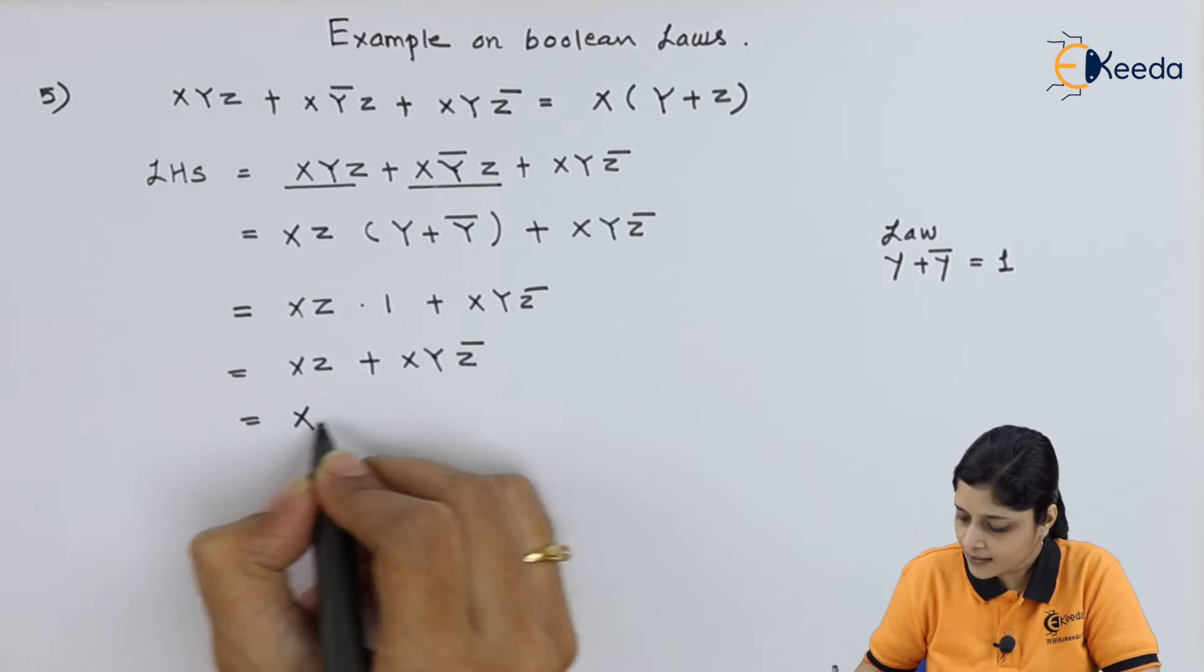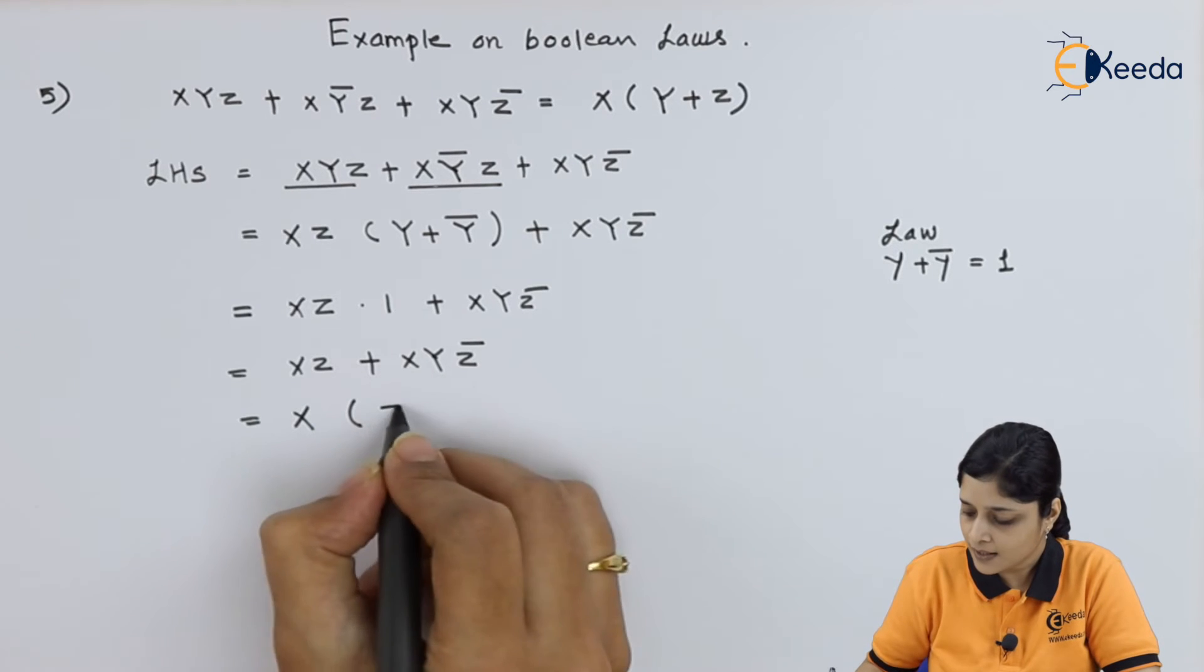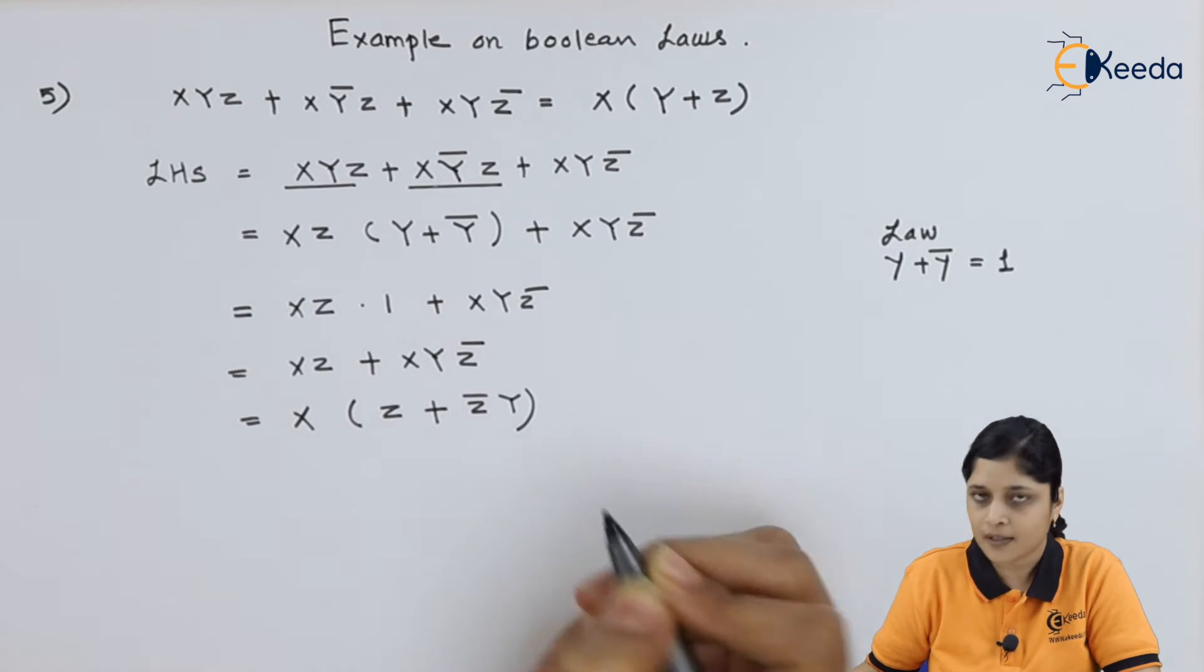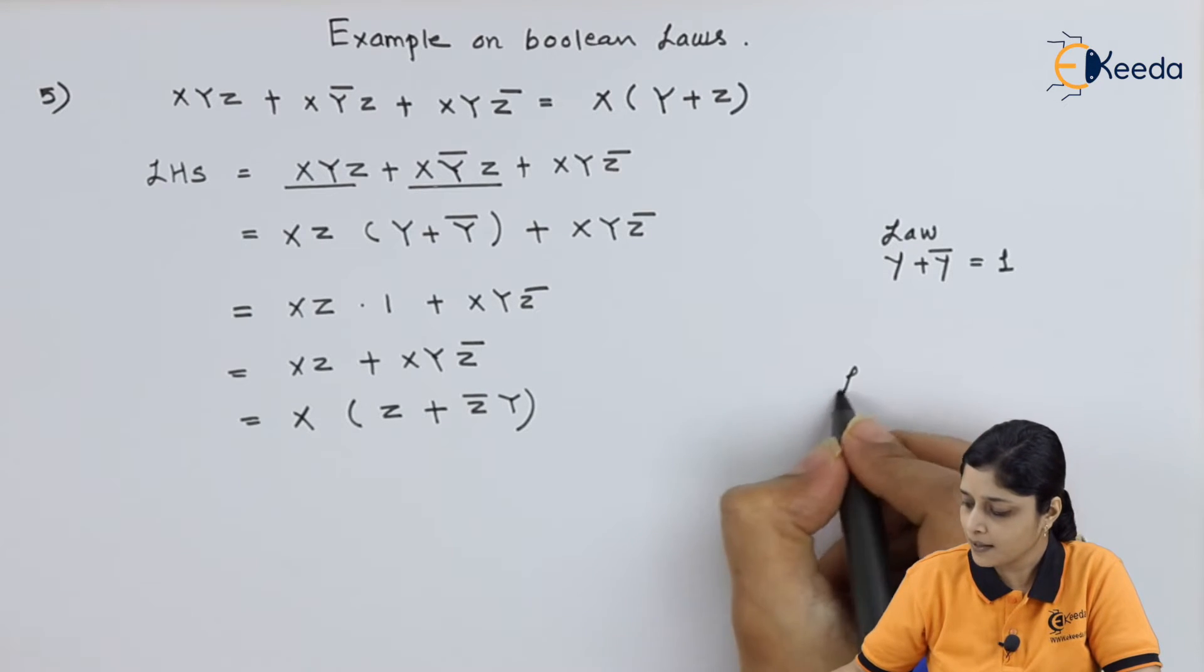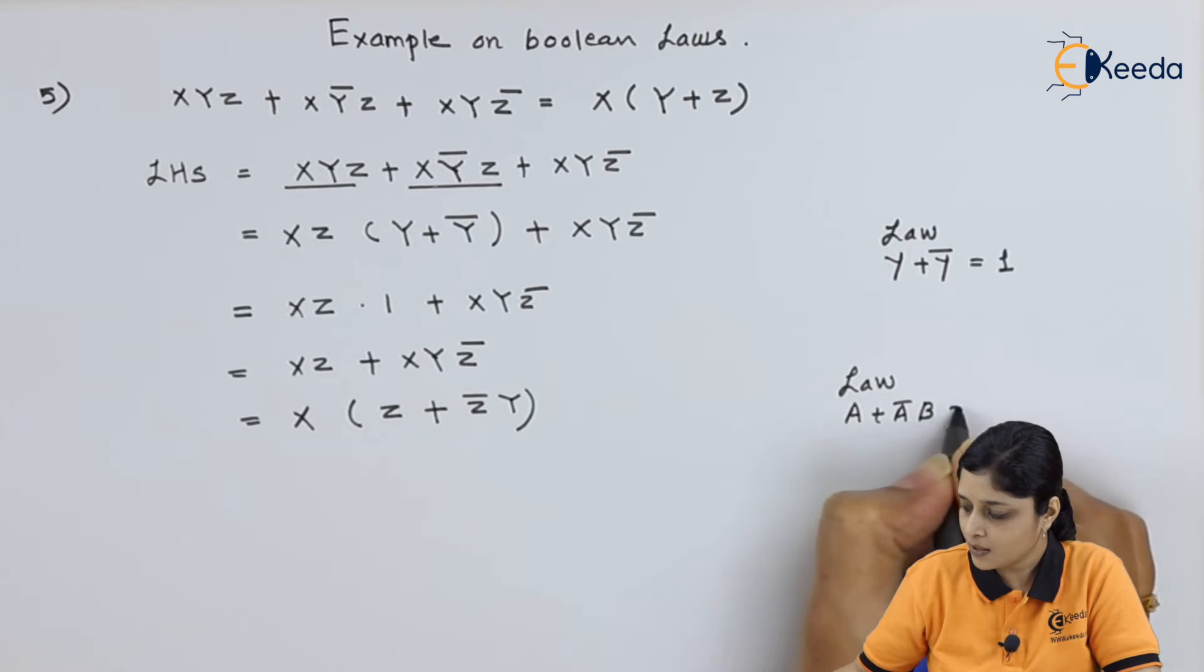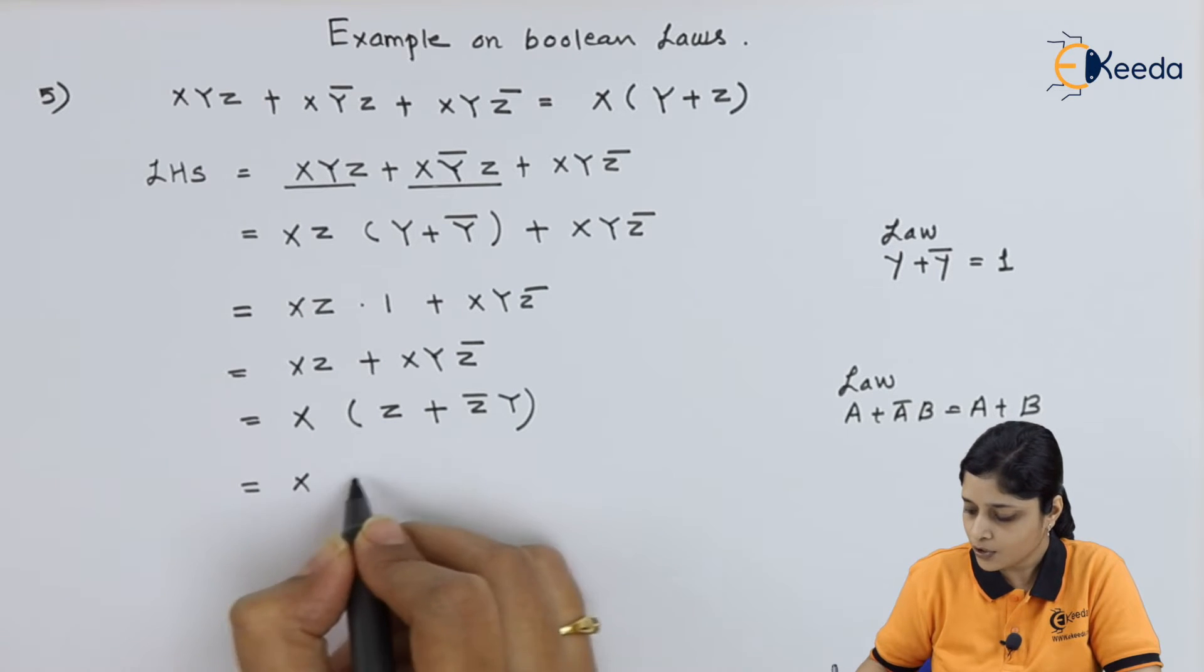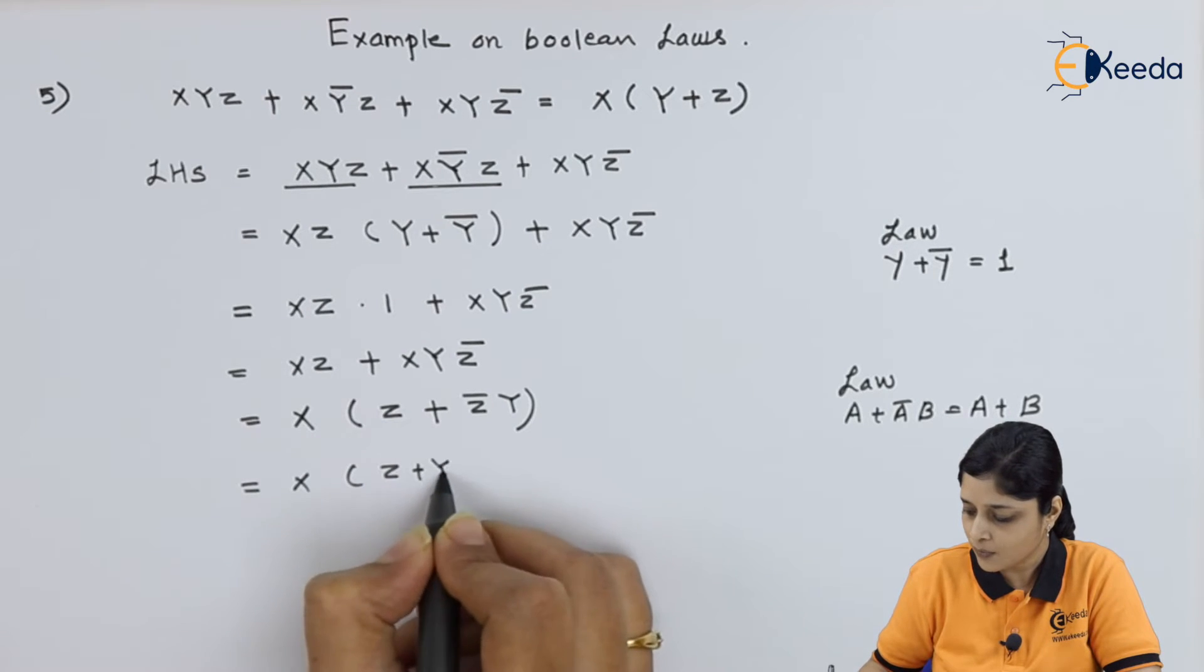Now, here you can take x common inside the bracket and write down z plus z bar y. Now, which law you can apply? a plus a bar b equals to a plus b. Just apply this law. What you will get? z plus y.